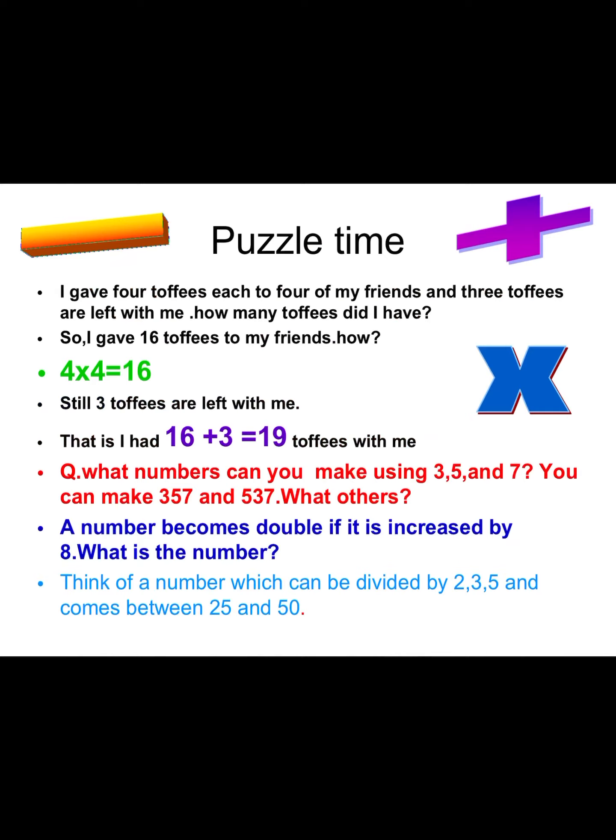This you can do orally and ask your friends to calculate — give the numbers, have a game, ask this question, and collect these questions to ask your friends. What numbers can you make using 3, 5, and 7? A number becomes double if it is increased by 8 — what is the number? Think of a number which can be divided by 2, 3, and 5, and comes between 25 and 50.